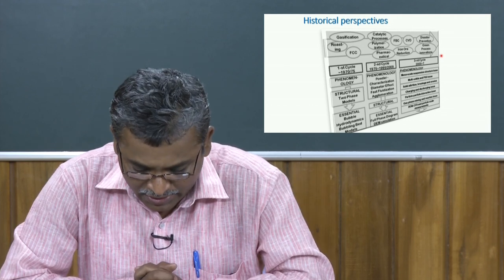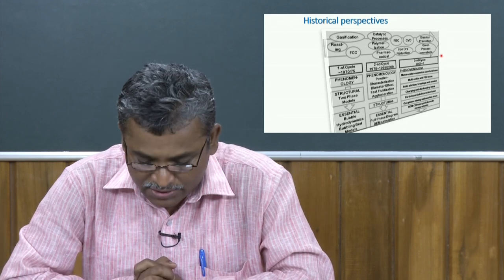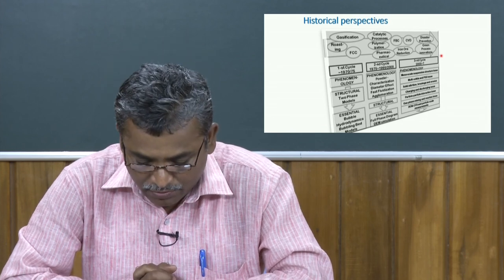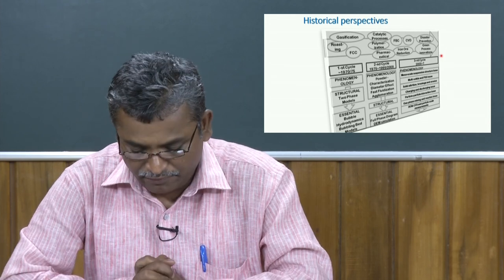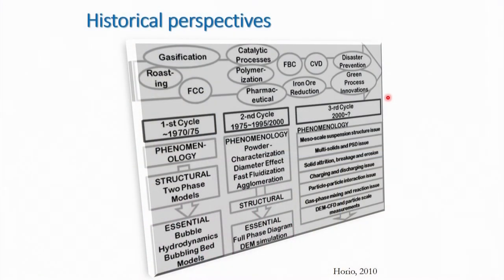The powder classification and how it affects different flow patterns of fluidization will be discussed later. Different types of fluidized beds and the effect of particle shape on the process are important. Hydrodynamic aspects like pressure fluctuations, heat transfer operations, and mass transfer operations, and how pressure fluctuations affect process yield or efficiency in fast fluidization, will also be discussed and are reported in the literature. The full phase diagram and simulation of the fluidized bed, as well as flow patterns, were discussed in the 1975–2000 period.